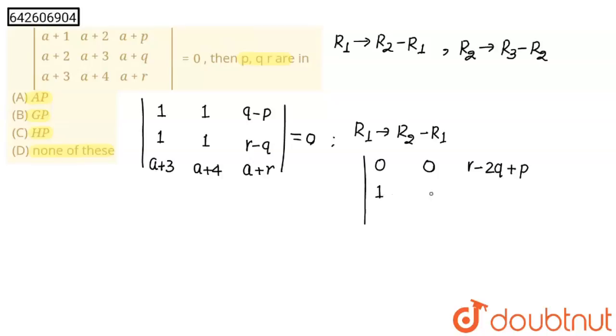Now this will be written as it is: 1, 1, r minus q. a+3, a+4, and a+r.